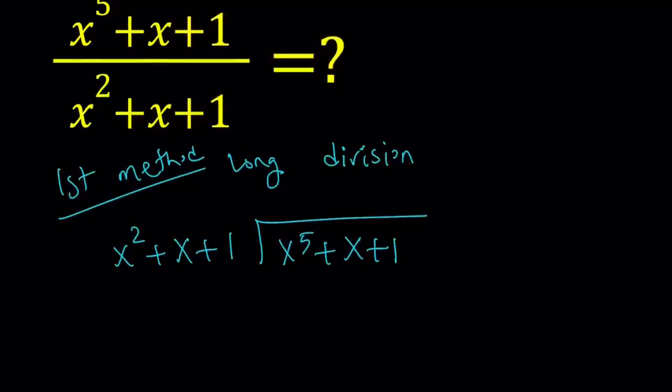Now, I'm going to divide x squared into x to the fifth. So I have to ask, x squared goes into x to the fifth how many times? The answer is x to the power of three. Because when you multiply x to the third by x squared, you get x to the fifth.